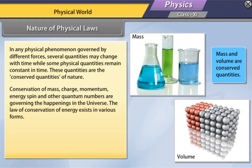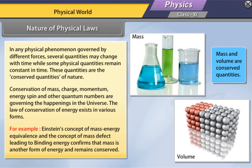The law of conservation of energy exists in various forms. For example, Einstein's concept of mass-energy equivalence and the concept of mass defect leading to binding energy confirms that mass is another form of energy and remains conserved.